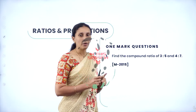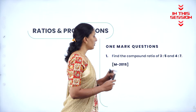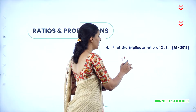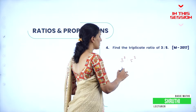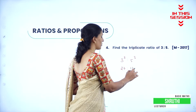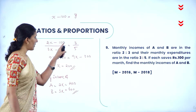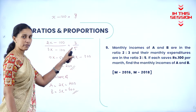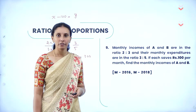We have two ratios, you have to multiply the two ratios, then you will get a compound ratio. You need to cube the ratios on both sides, so 3 cube is 27 and 5 cube is 125, so this is the triplicate ratio. 400 minus 100 should be 300, 600 minus 100 should be 500, so their expenditure is 3 by 5.